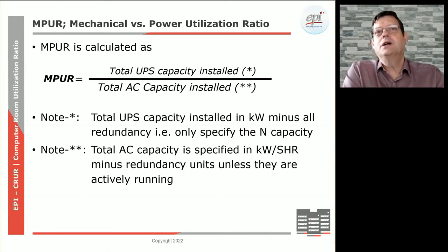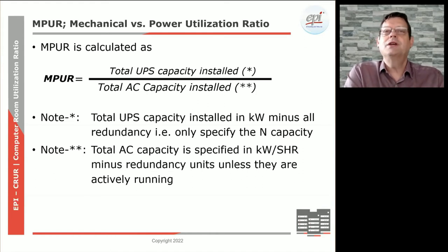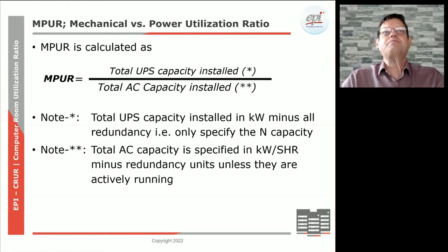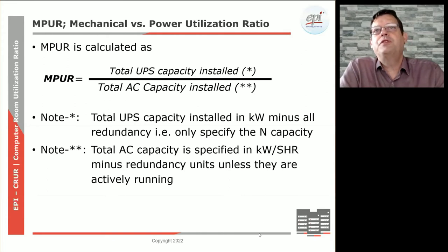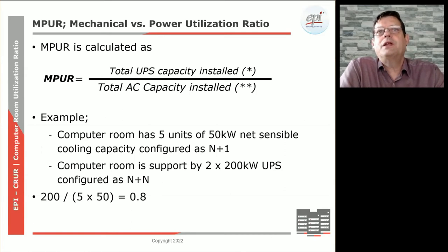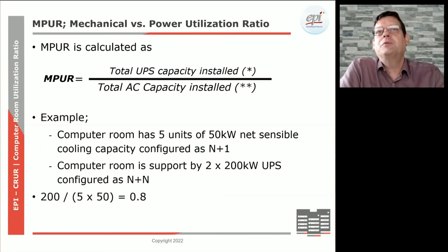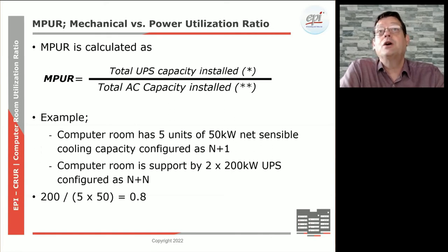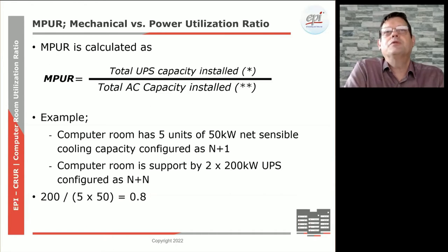If the air conditioners are all running, add the capacity of all air conditioners running at any given time. If you have standby air conditioners on a rotational basis, take the capacity you normally run and subtract the capacity that is shut down. For example, a computer room with five units of 50 kilowatt net sensible cooling capacity configured as N plus one, with all running at the same time, gives 250 kilowatt of sensible cooling capacity. The computer room is supported by a 200 kilowatt UPS. So: 200 UPS capacity as N divided by 250 total air conditioning capacity gives an MPUR ratio of 0.8.